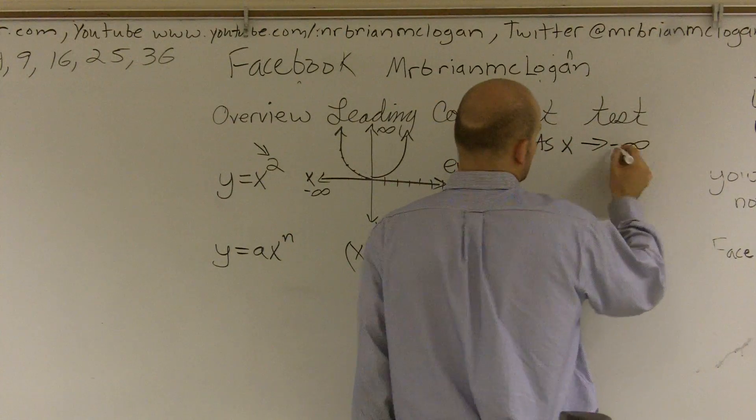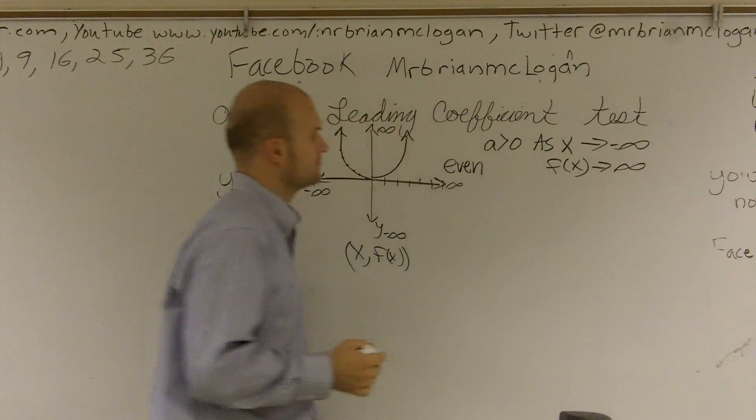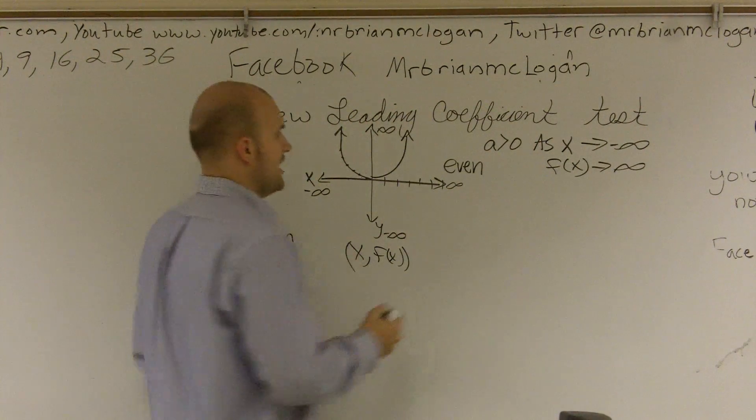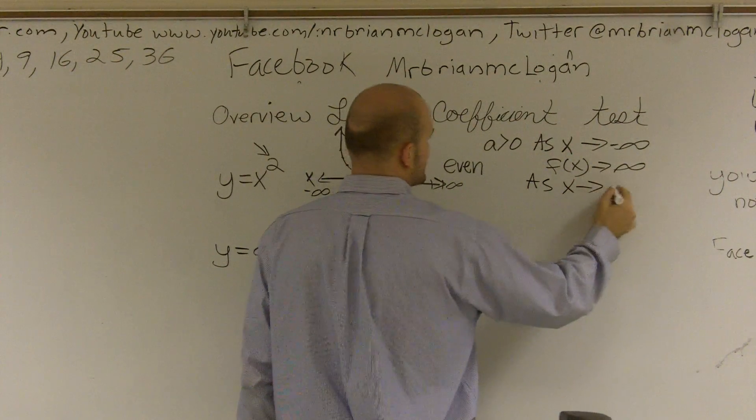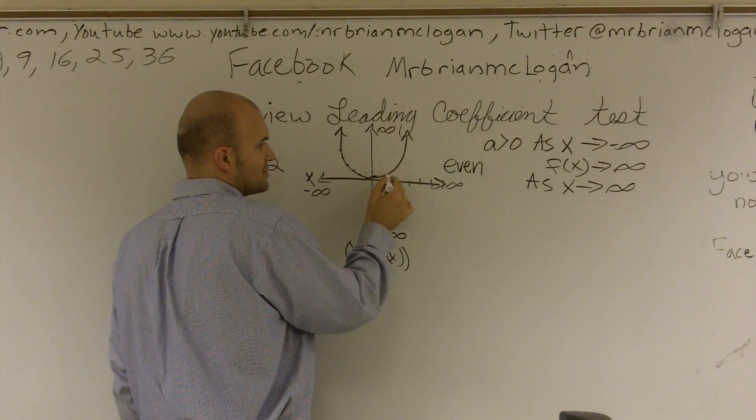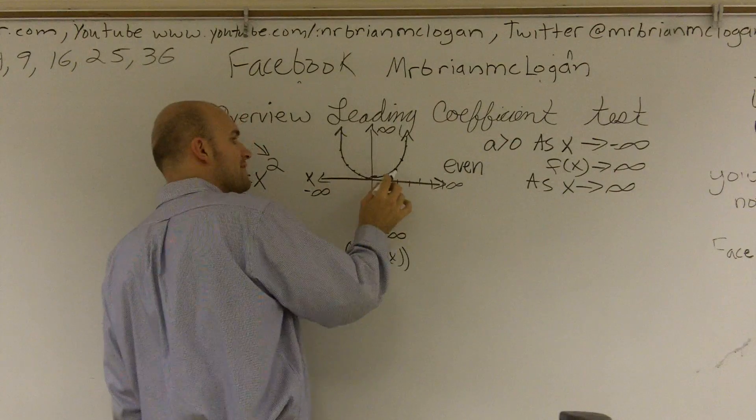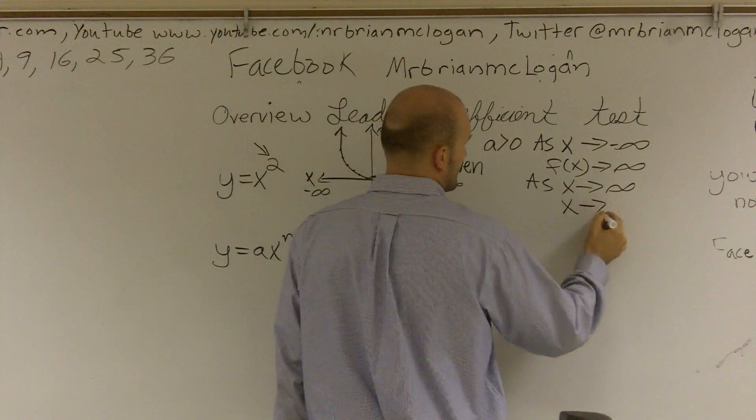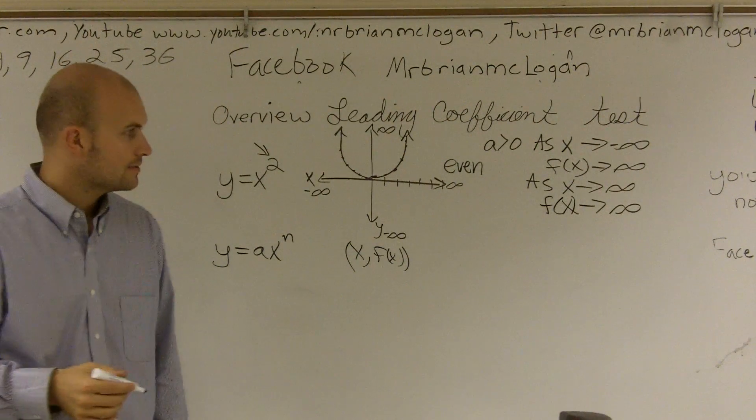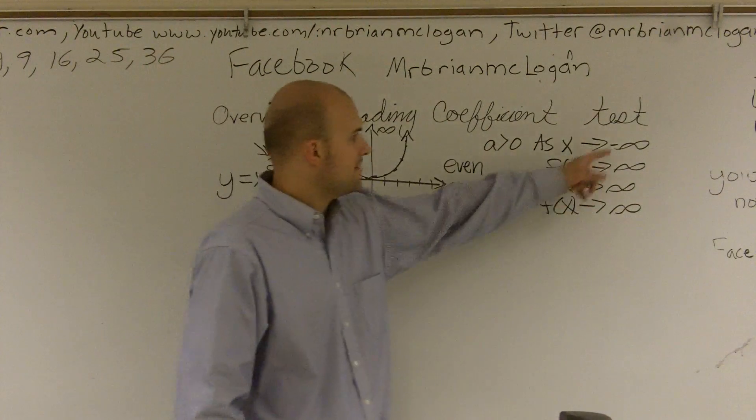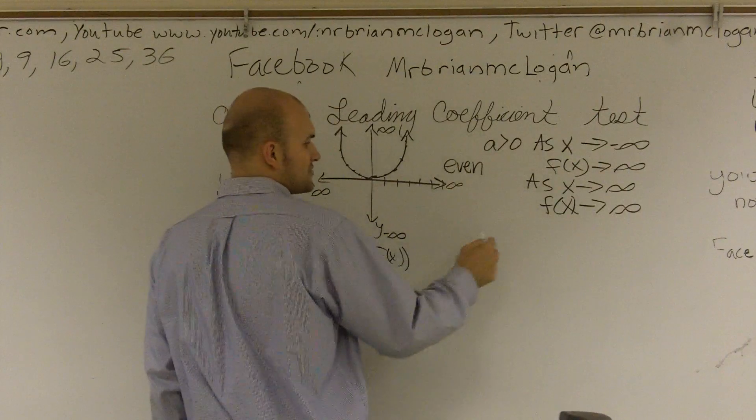So as x goes to negative infinity, f of x goes to infinity. And then as x approaches infinity, so as x goes this way towards infinity, again, my output value or my f of x goes to infinity. And you can notice that both of them, whenever it's even, they both go to infinity. That's when a is greater than 0.